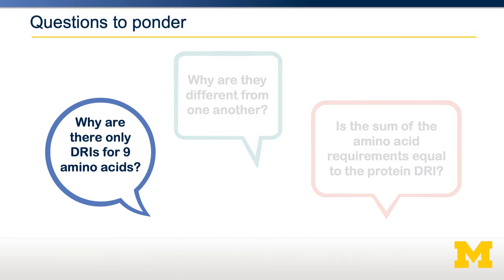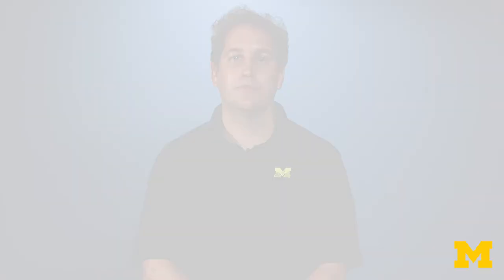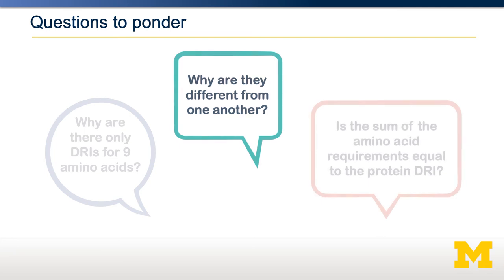Here are some answers. We only need DRIs for the essential amino acids. For dispensable and conditionally essential amino acids, their intake is not relevant because we can make as much of those as we need — we only need to worry about dietary intake for the amino acids we can't make ourselves. These are the nine essential amino acids in adults. The amino acid requirements differ from one another because proteins have different requirements for those amino acids: leucine is quite abundant in most proteins, whereas tryptophan is quite rare, so we need much more leucine than tryptophan. If we add up the total amino acid requirements, we come to somewhere around 100 milligrams per kilogram per day — much less than the protein DRI.